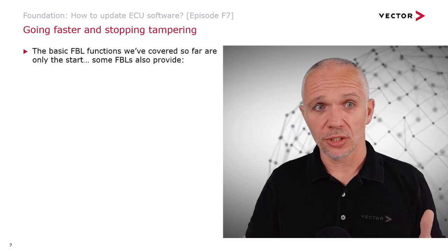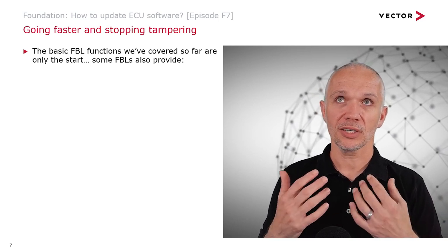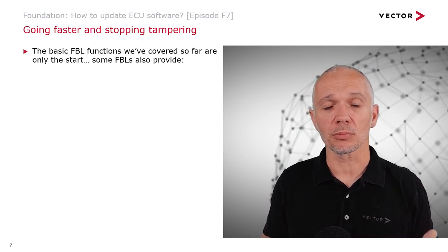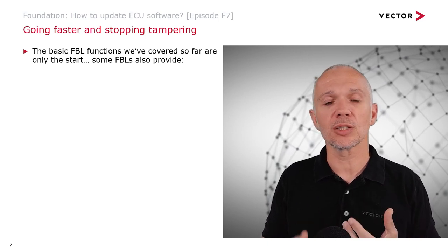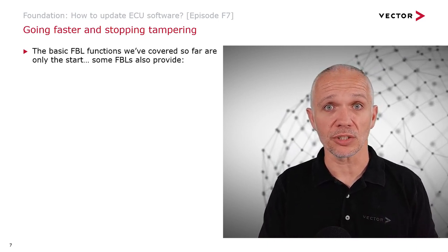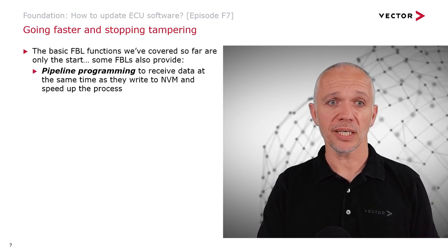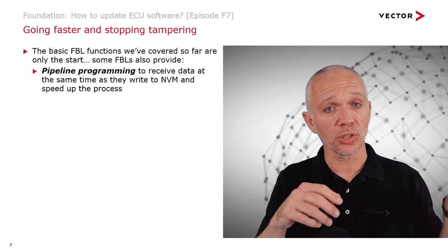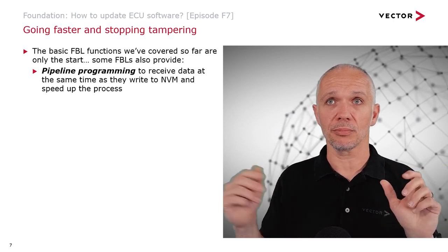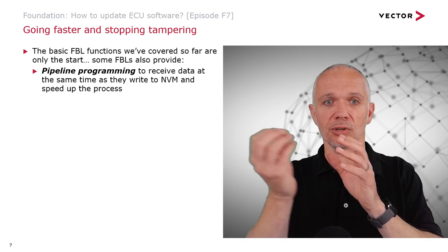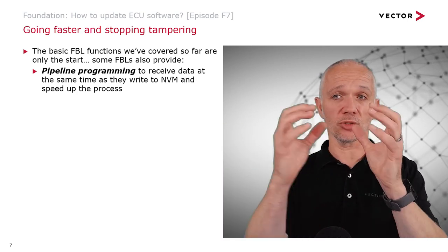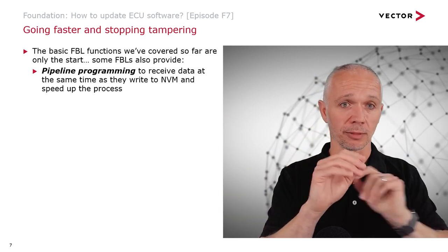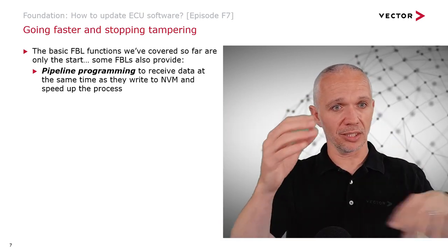There are other things that flash bootloaders can do to either increase the speed of the reflashing sequence overall or to prevent tampering of ECU software. To increase the speed, some FBLs will allow pipeline programming, which means they can receive data while also writing to non-volatile memory. Traditionally, a flash bootloader would get data over the network, store it locally, and once it's received everything it would start writing it. Pipeline programming means you've got data coming in at the same time as writing.